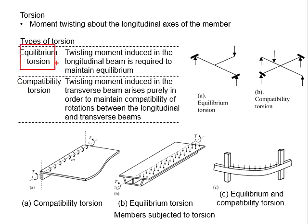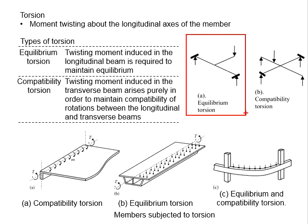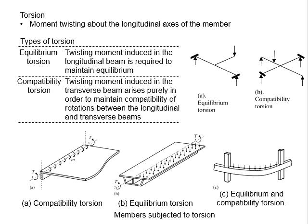Equilibrium torsions refers to the twisting moment induced along the beam in order to maintain equilibrium. This is a typical example of equilibrium torsions — due to the vertical load acting on the member, there will be a twisting moment along the beam span. In order for the beam to maintain equilibrium, it needs to have sufficient torsional resistance.